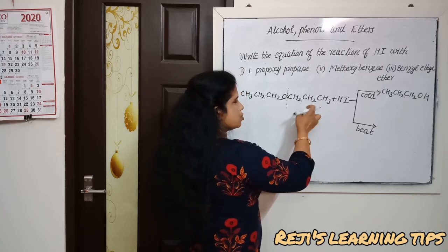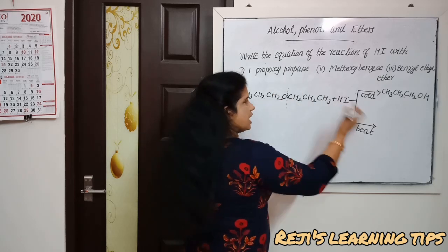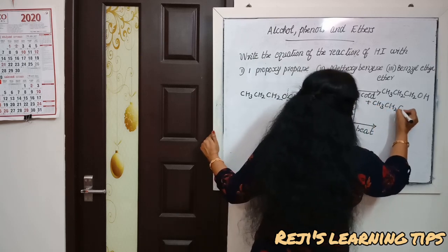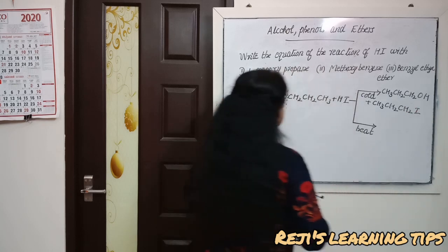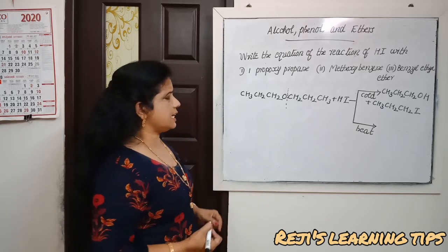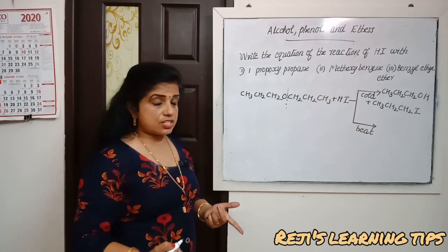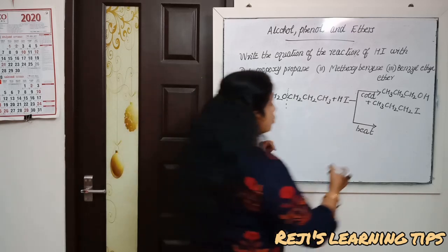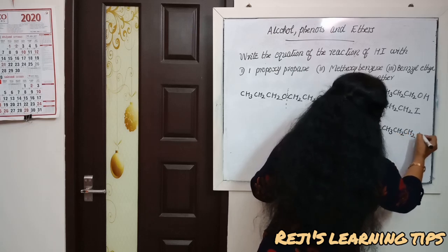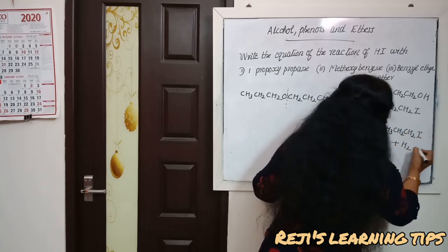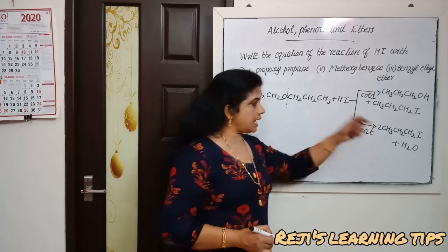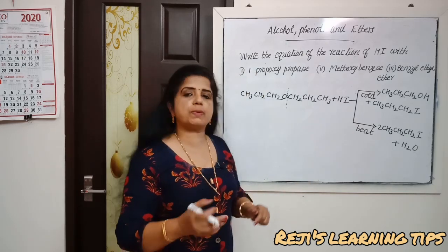In this case, we will get two molecules of CH3-CH2-CH2-OH propanol. In hot condition, we will get two molecules of propyl iodide plus water.